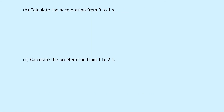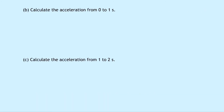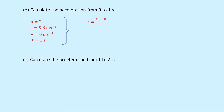Part B says to calculate the acceleration from 0 to 1 seconds. Looking back at the graph, we calculate the acceleration over that negatively sloping line. Writing down what we know: a equals question mark, u equals 9.8 metres per second, v equals 0 metres per second at the highest point, and time equals 1 second. Putting that into a equals v minus u over t, we get 0 minus 9.8 divided by 1, which gives an answer of minus 9.8 metres per second squared.